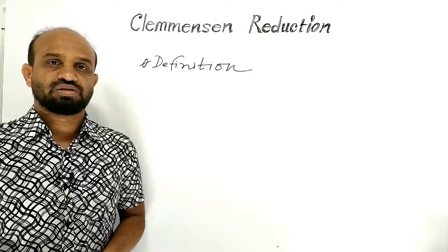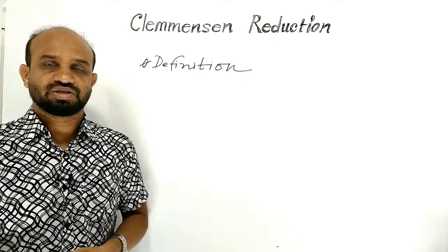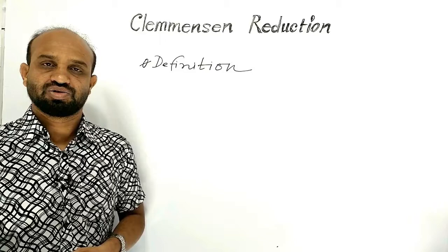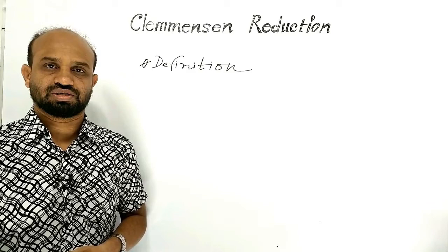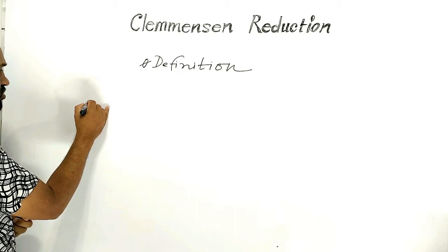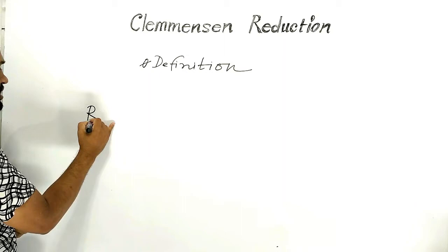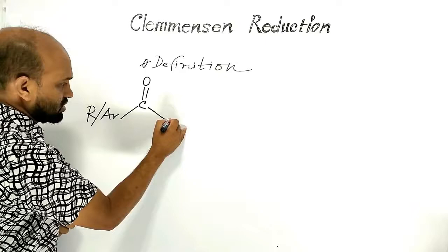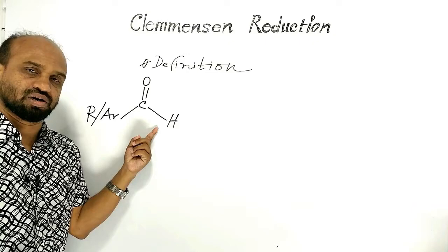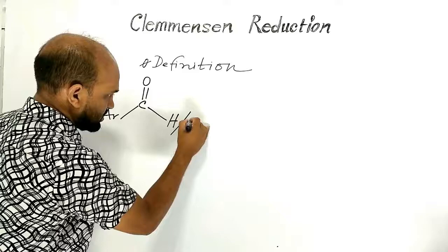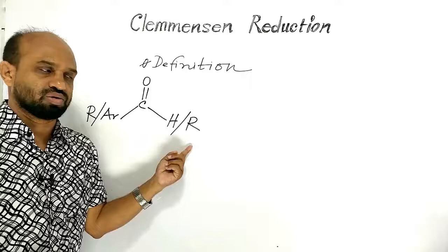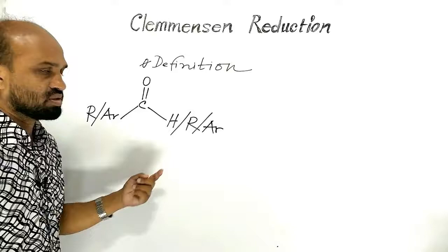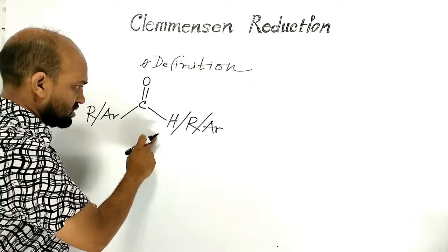The first point is the definition of Clemmensen reduction. It is a kind of reaction by which alkanes are prepared from aldehydes and ketones in presence of zinc amalgam and concentrated hydrochloric acid. The general formula involves an alkyl or aryl group attached to a carbonyl group. If it is hydrogen then it will be an aldehyde; if it is an alkyl or aryl group then it will be a ketone.